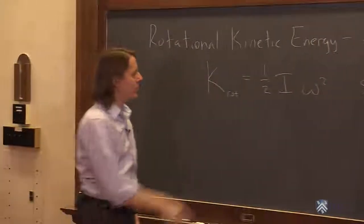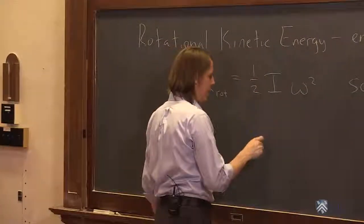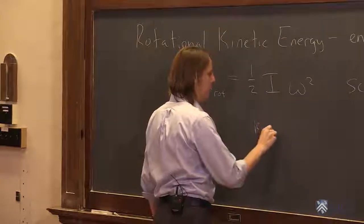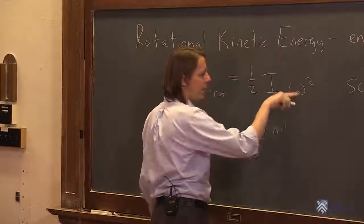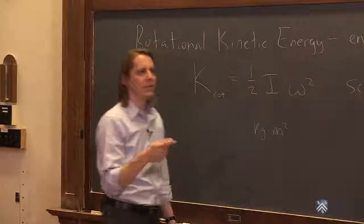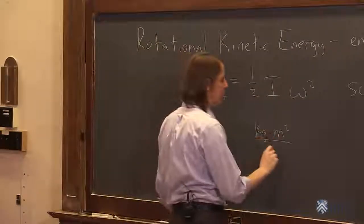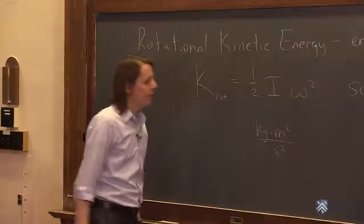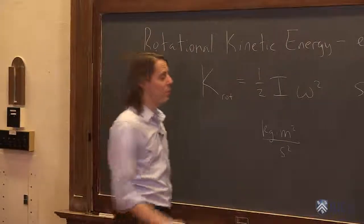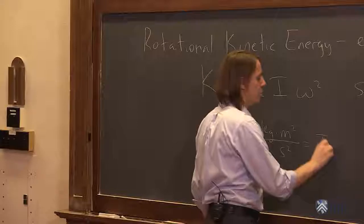And if we want the unit, we can work it out real quick. I is in kilogram meter squared, and omega squared is radians per second. If you square it, that's radians squared per second squared. Radians aren't real, so we'll just put the second squared down there. So kilogram meter squared per second squared equals a joule.